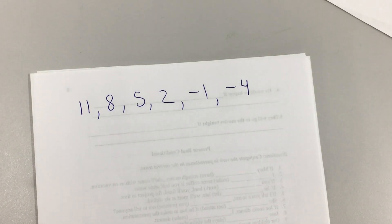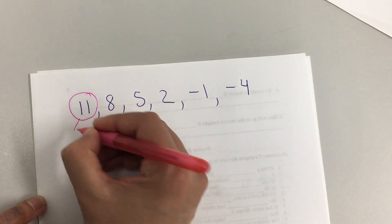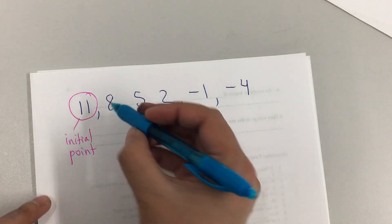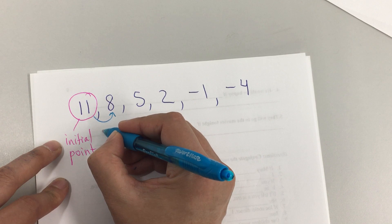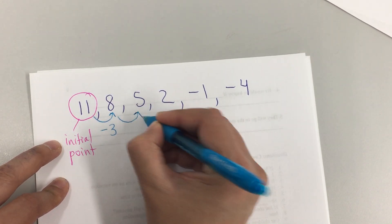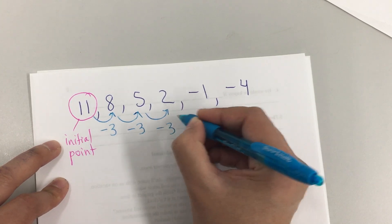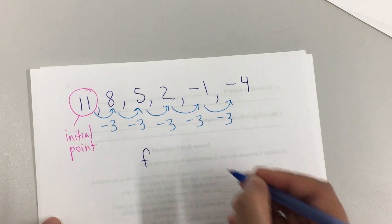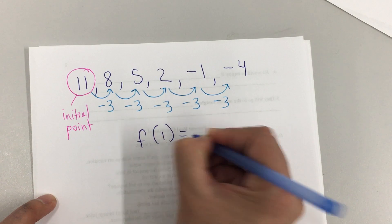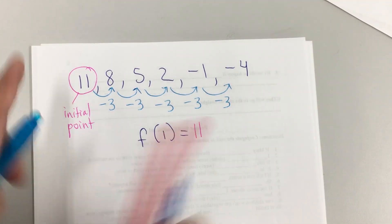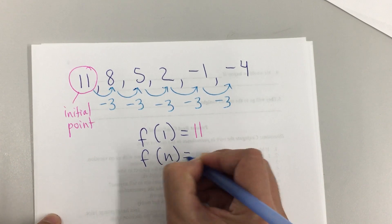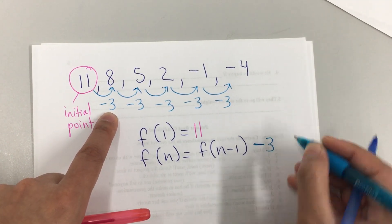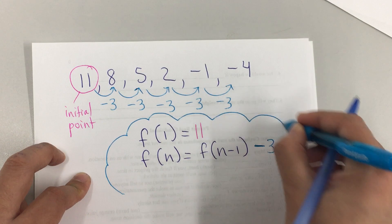What's my initial point here? And what's happening for my pattern? Well, my initial point is 11. And it looks like I'm taking away 3 — minus 3, minus 3, minus 3, minus 3. So my recursive formula will always be f of 1 equals the initial point, and f of n equals f of n minus 1, and the pattern, which is subtract 3. So, that's my recursive formula.